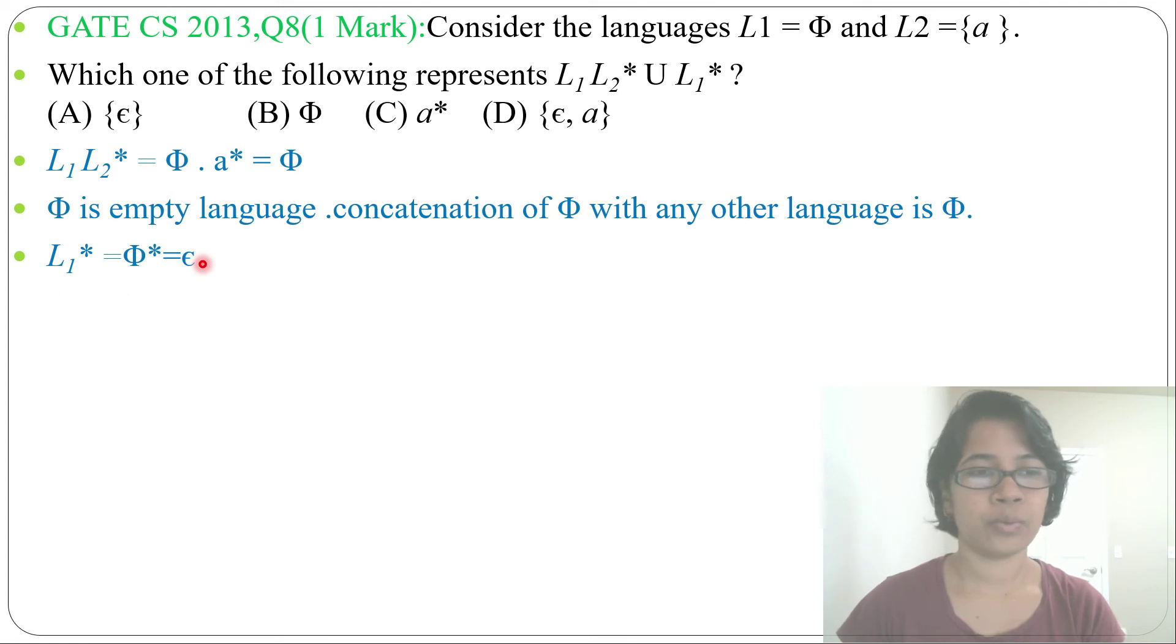Then union of both, so union of L1, L2 closure and L1 closure. So L1 concatenation L2 closure is Phi, we found here. Then L1 closure, that is Epsilon, then Phi union Epsilon. Phi is empty language, Epsilon is empty string, Phi union Epsilon will be Epsilon.